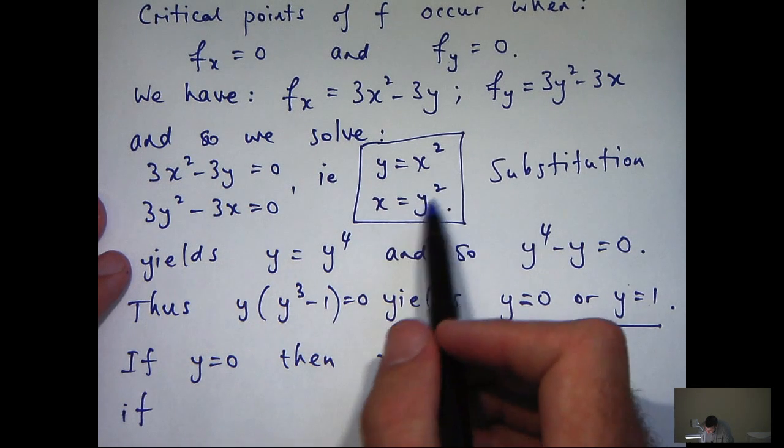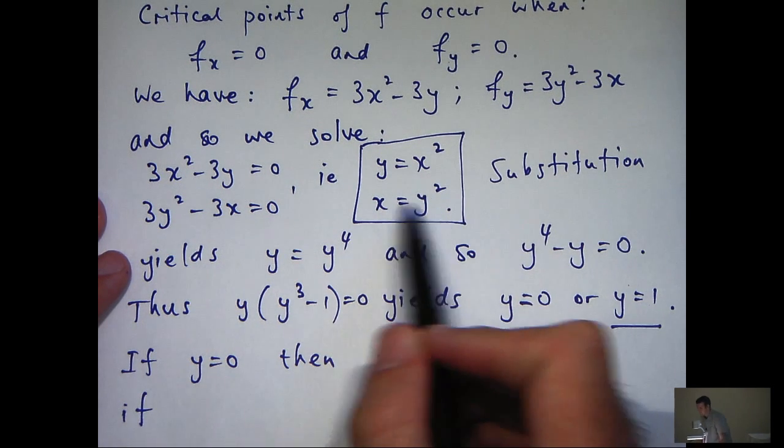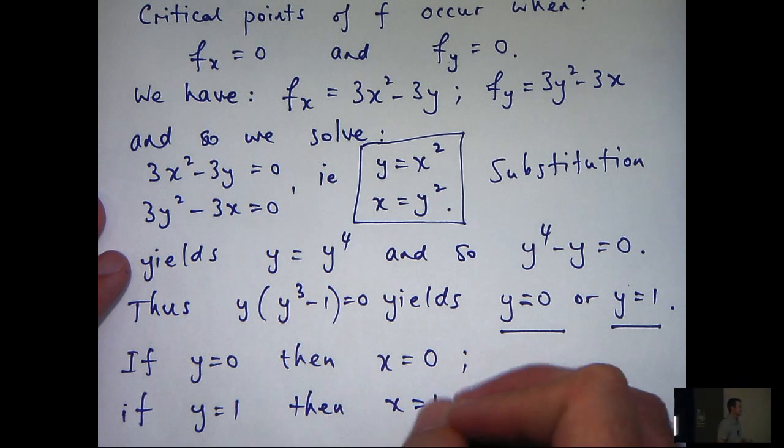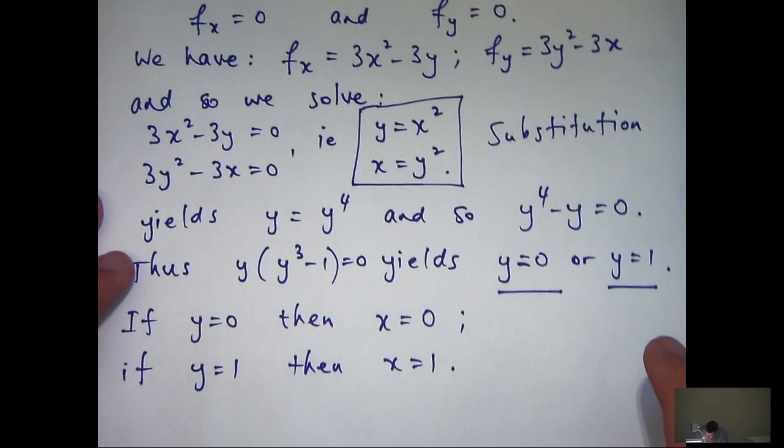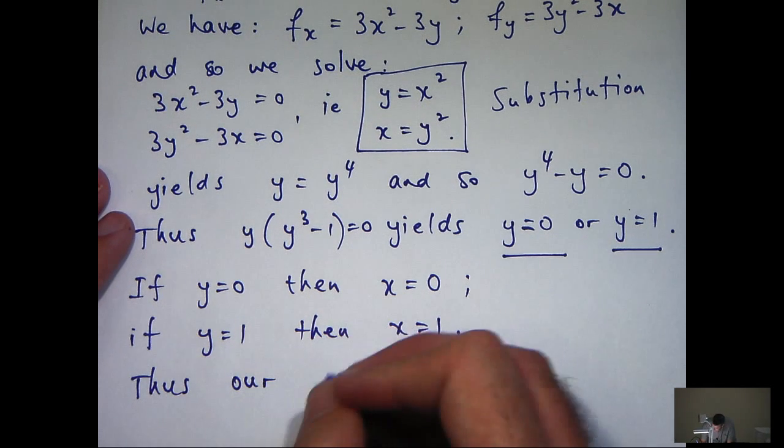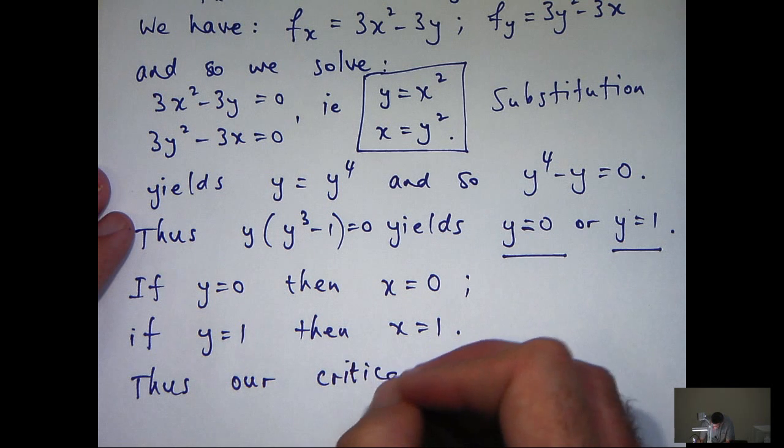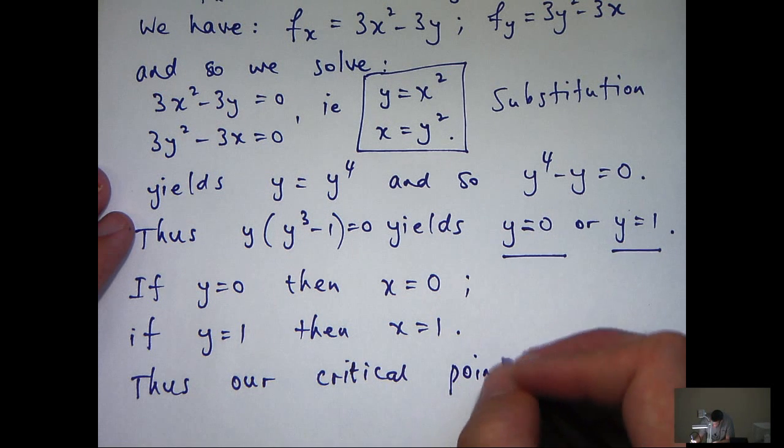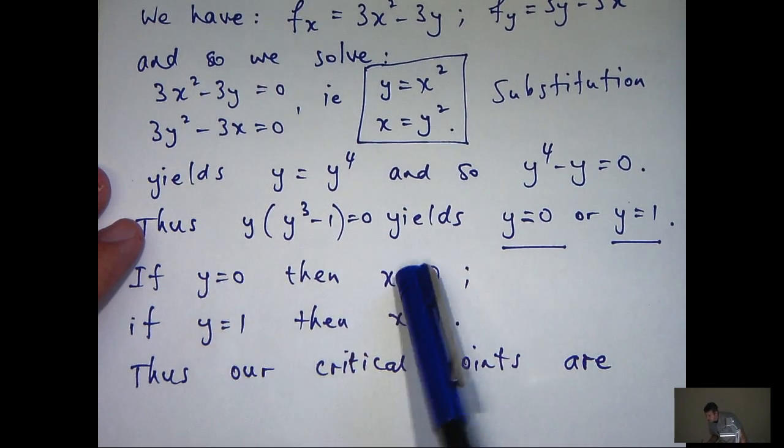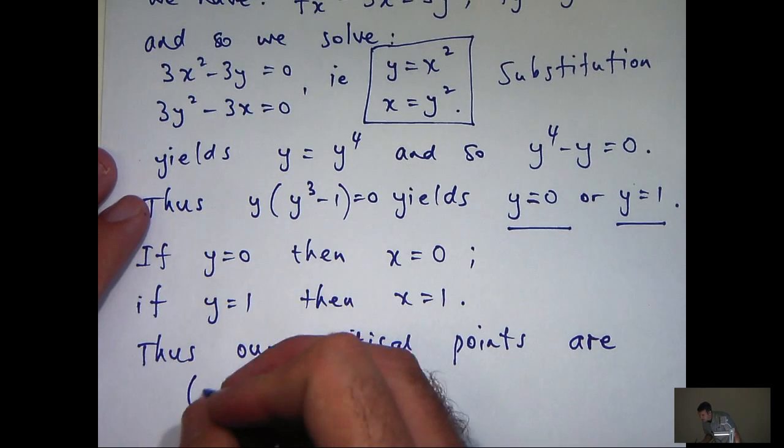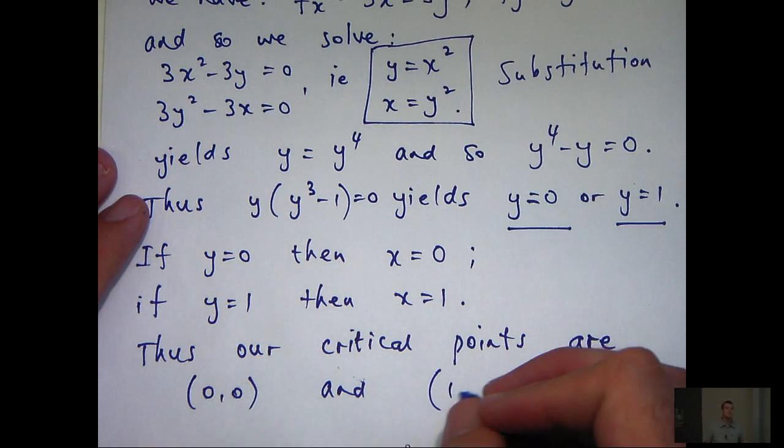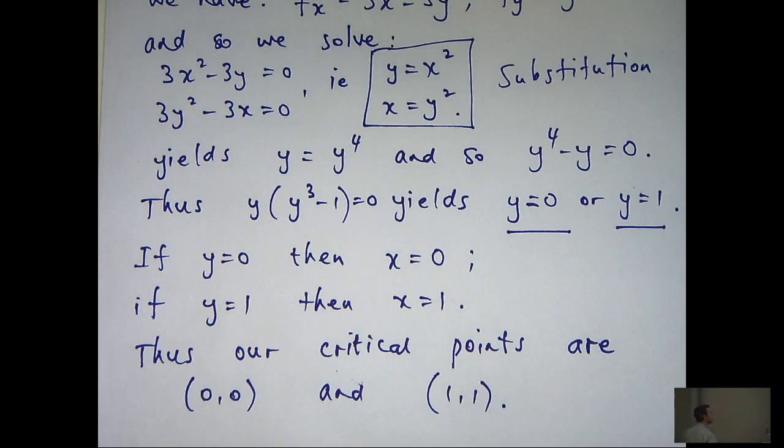And if y equals one, I can substitute y equals one here and I'll get x equals one. So we've calculated our critical points now: zero, zero and one, one. That's the first half of the question done.